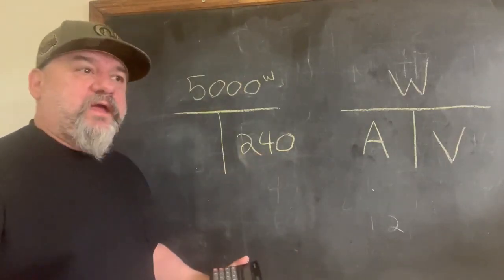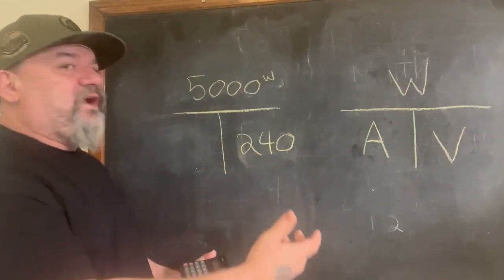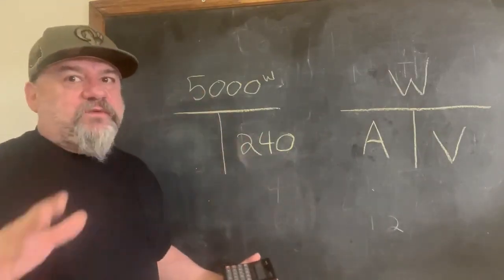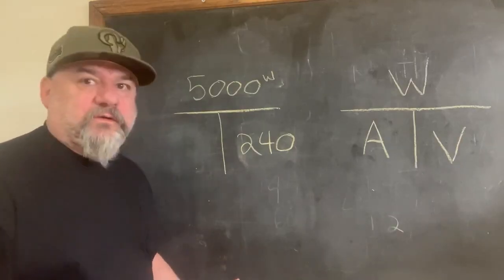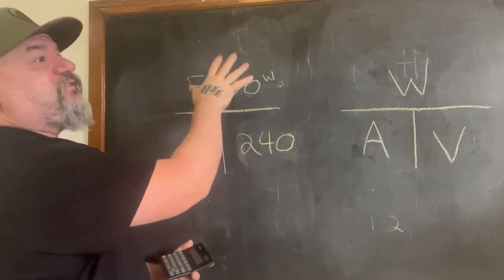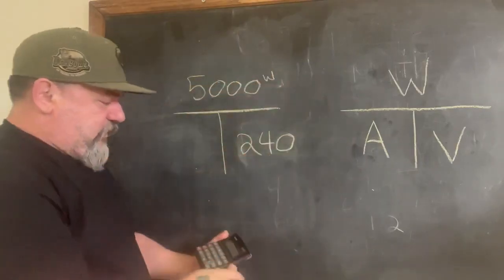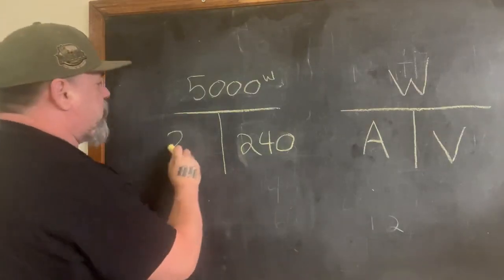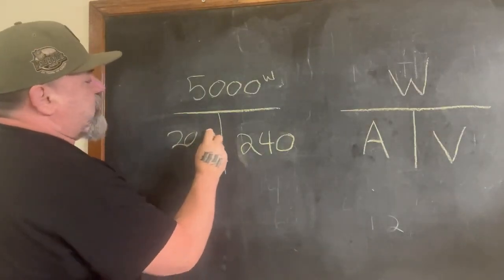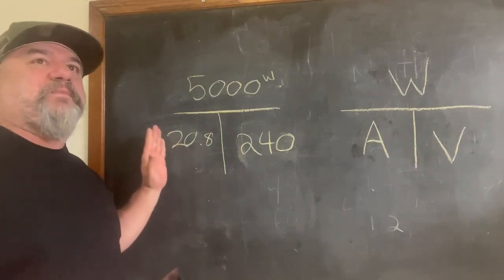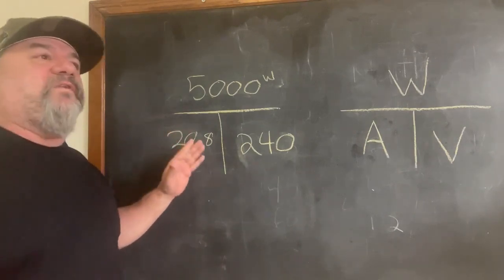We got 240 volts. We know it's the 220 plug, or 240 volts, what we use in the industry, and a 5000 watt welder. 5000 divided by 240 is 20.8 amps. So we'll call that 21. So that's going to be a 30 amp breaker because we're over.